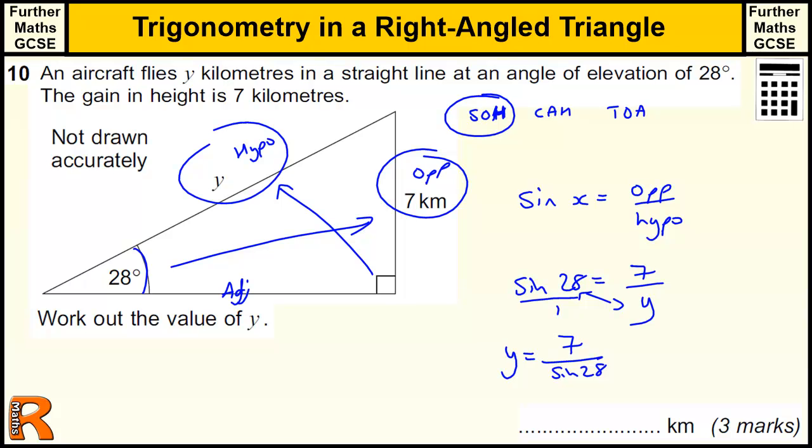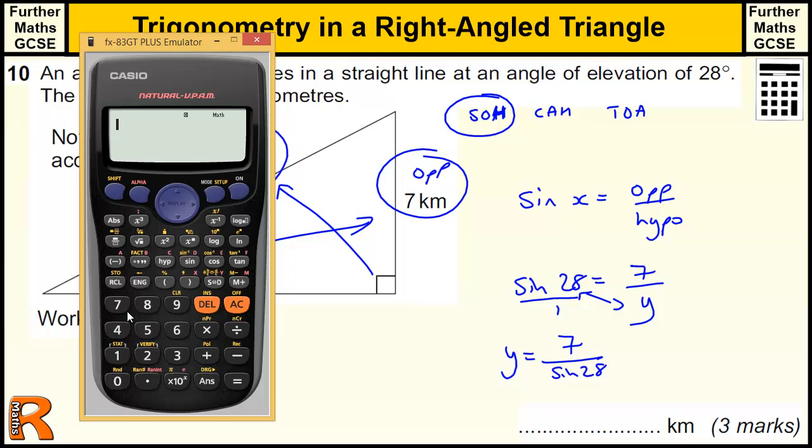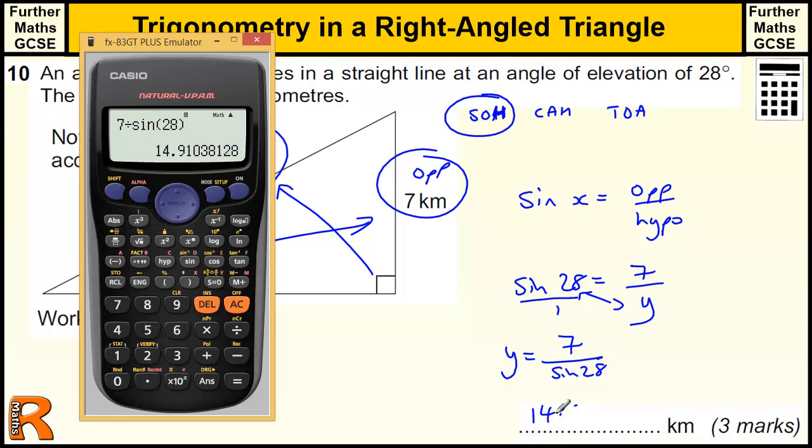Now we need to calculate to work this out. So 7 divided by the sine of 28. We could write that as a fraction, but I'm just going to use the divide button. We get 14 point... 14.9.